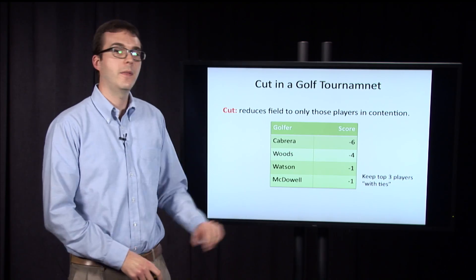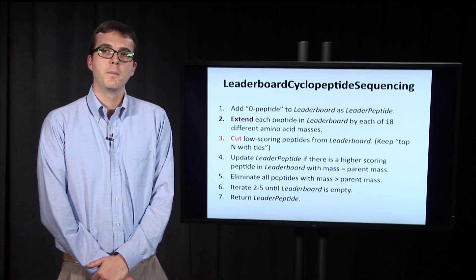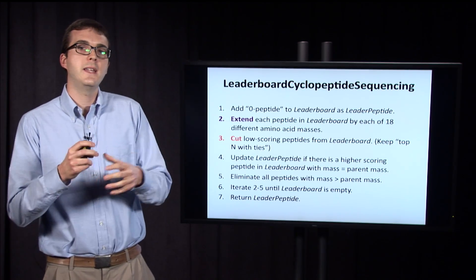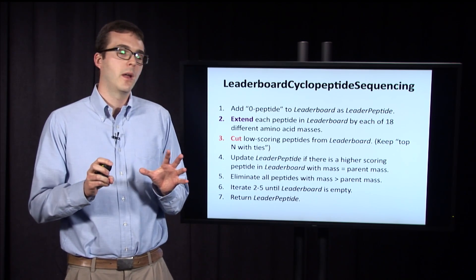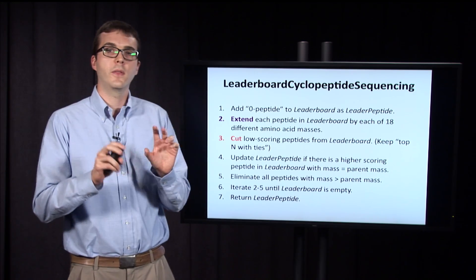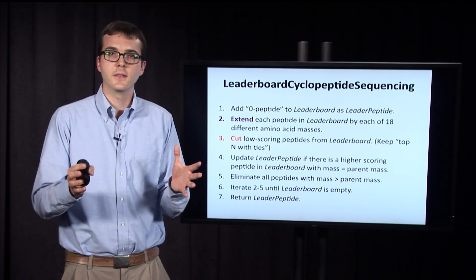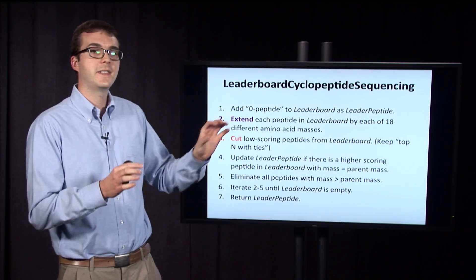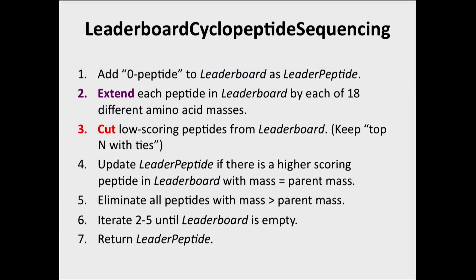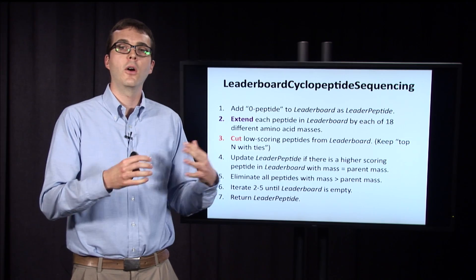After this cut, we have four players remaining. The new idea is called leaderboard cyclopeptide sequencing. How it works is we start off with a zero peptide — essentially an empty string. Then we extend each peptide on the leaderboard in each of 18 possible different directions, adding each of the 18 different amino acid masses to the peptides currently on the leaderboard. Then we have a cut step — the new bound step — which cuts the low-scoring peptides.